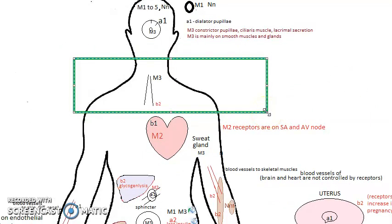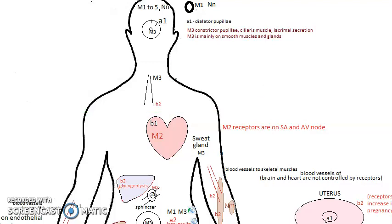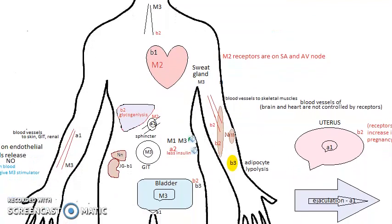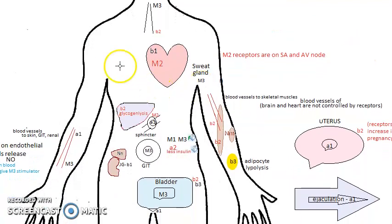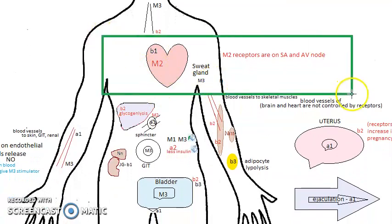For the bronchus: if you are sitting relaxed, the bronchus is constricted — that is M3. If the dog is chasing you and you need bronchodilation, that is beta-2.